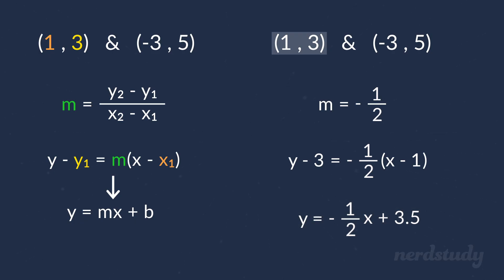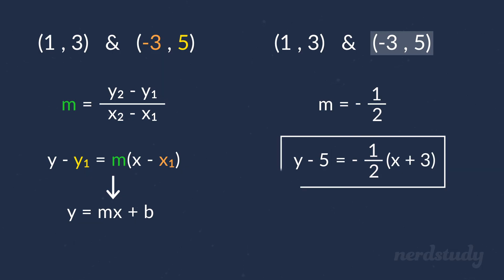Great! And you might be wondering, what if we had used the other point instead? Well, let's go ahead and try it! Here's what we get when we plug in the values for this other point. When we simplify this, we get x plus 3, and this would be the equation in point-slope form.